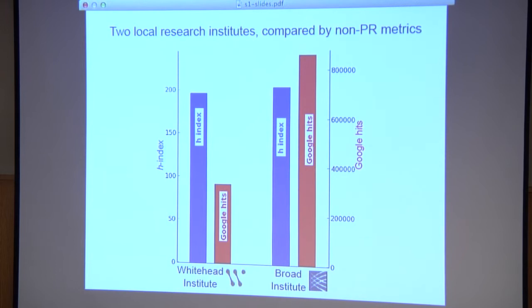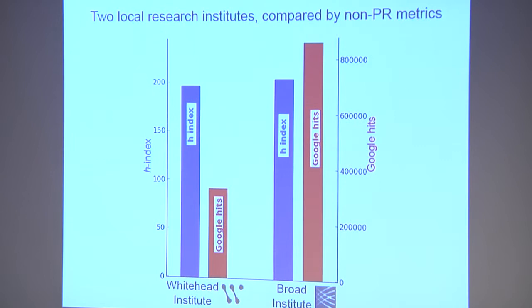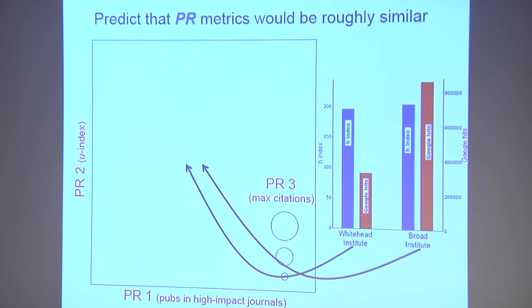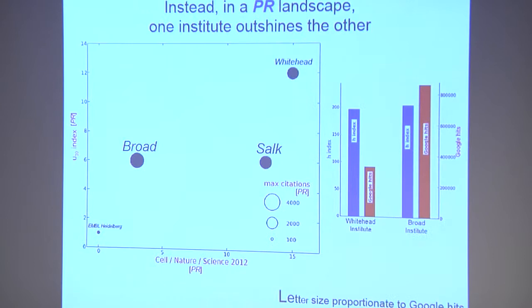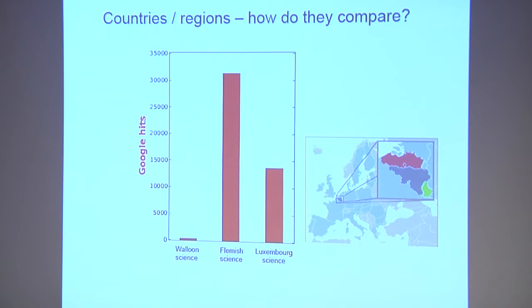You can do institutes as well as people. Here are two institutes down the street — the Whitehead and the Broad. By Google Hits and H index they're fairly comparable to each other. But if you look at a personalized and refined landscape with three PR measurements — U indexes, publications in high-impact journals, and maximum citation — all personalized, refined, with reviews excluded and contributing author required — the Whitehead is several-fold better than the Broad, whereas previously by non-PR impacts they were pretty much comparable. The outliers for comparison are the Salk Institute and the MBL Institute.